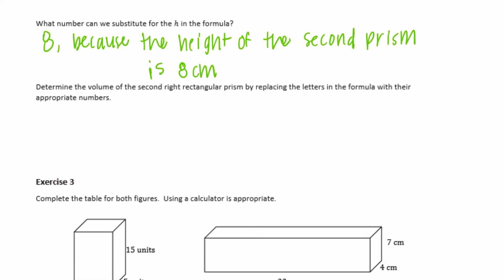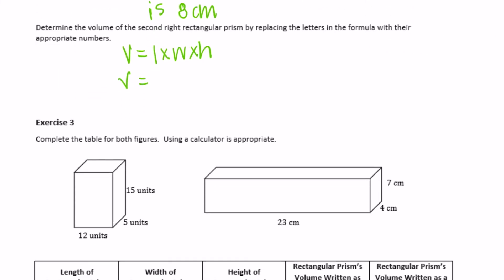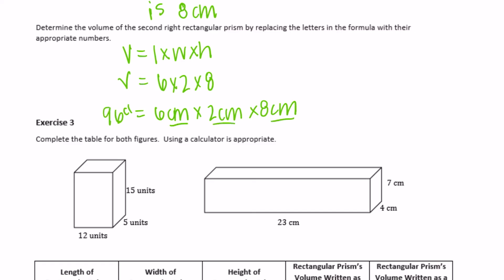Determine the volume of the second rectangular prism by replacing the letters with their numbers. Volume equals length times width times height, so we substitute: 6 times 2 times 8. 6 times 2 is 12, and 12 times 8 is 96. With labels, that's 96 centimeters cubed.